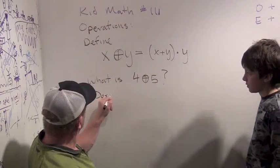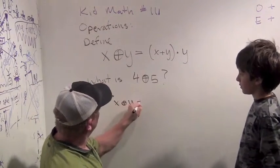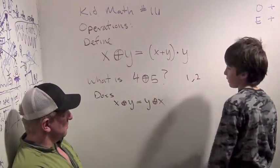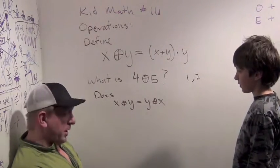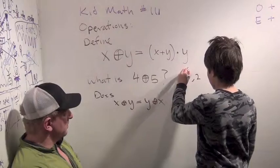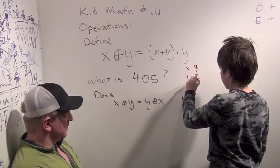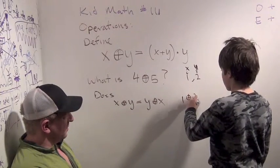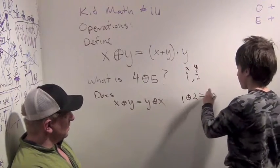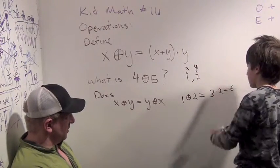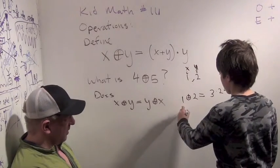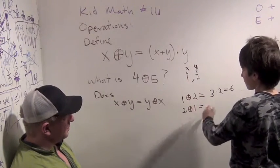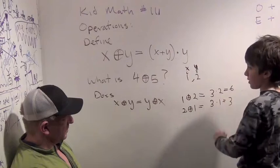Does, is it commutative? Does x circle plus y equal y circle plus x? Well, let's just use, let's use 1 and 2 to prove this, see if it's true or not true. Okay. Well, 1 is going to be x, 2 is going to be y, right? Y is going to be 2. Okay. So we have 1 circle plus 2 is 3 times 2, which is 6. And 2 circle plus 1 is 3 times 1, which is 3.